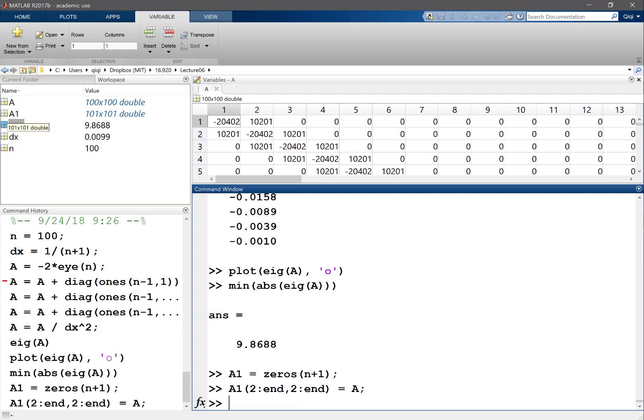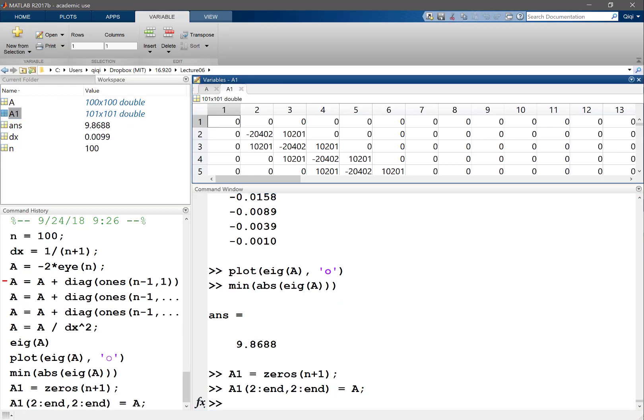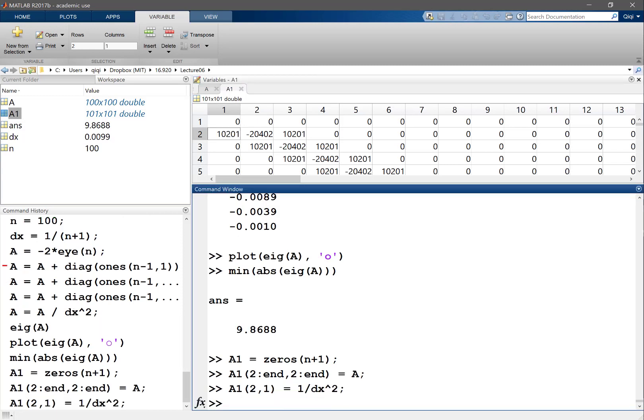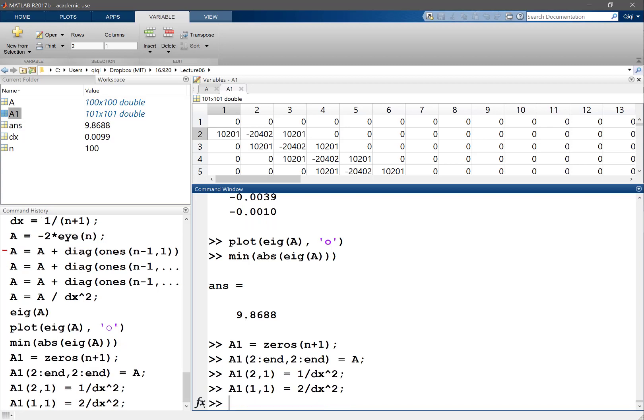So let's look at A1 now. A1 starting from here is the same thing, right? And A1 of, let's fill in this entry first which is 2, 1 is equal to 1 over dx squared. So now this is the same and A of 1, 1 is actually the same thing as before and A of 1, 2 is actually negative of this.